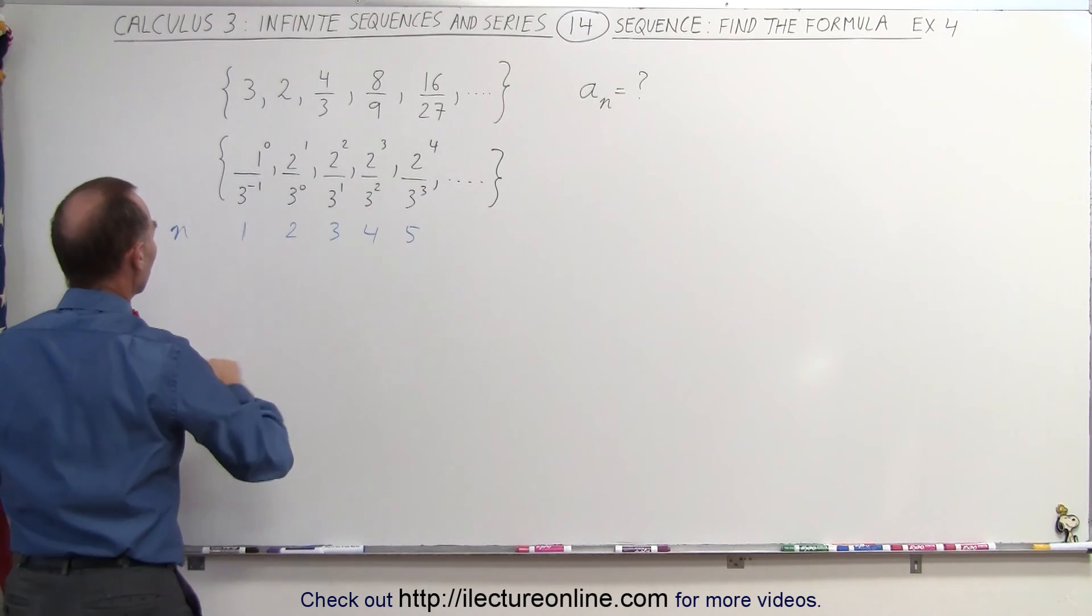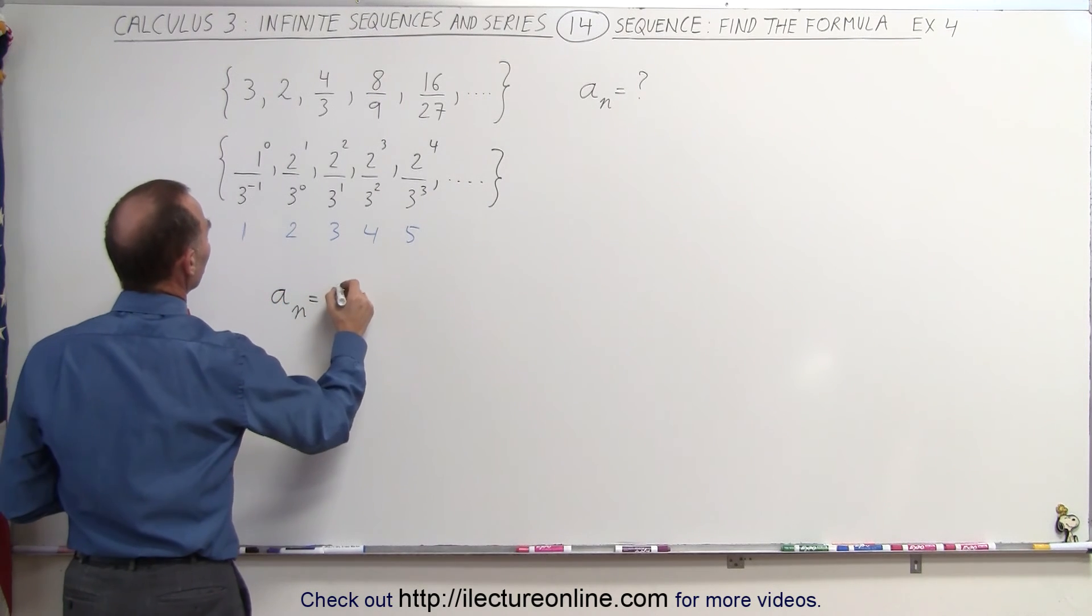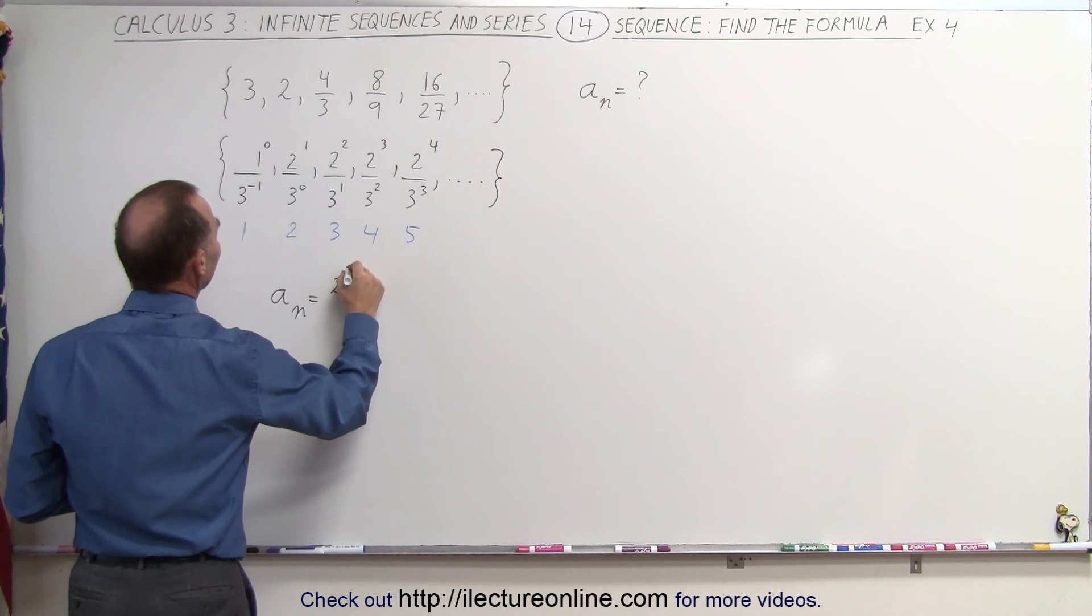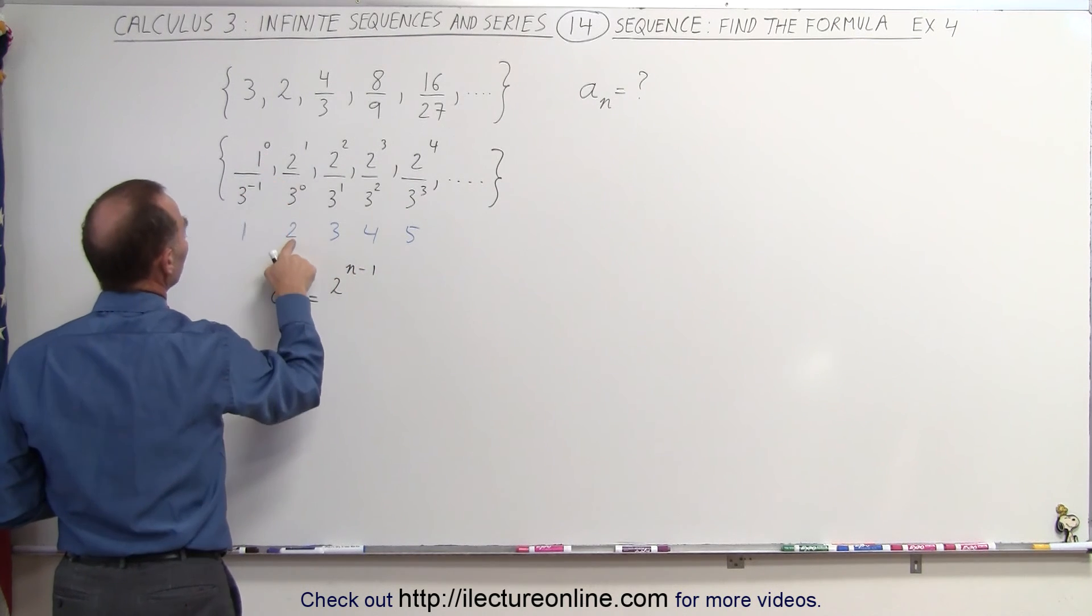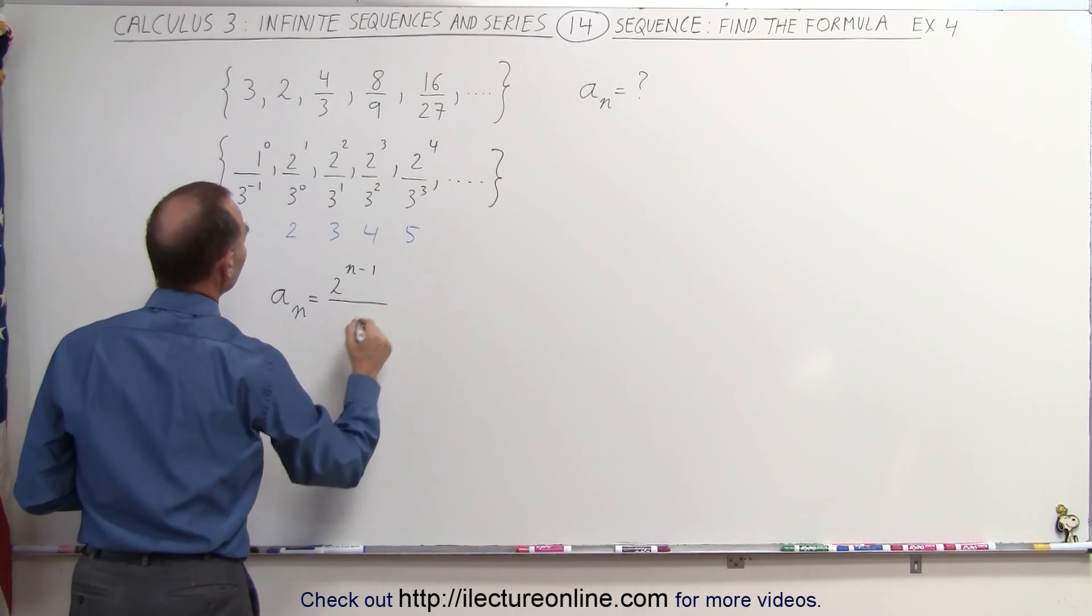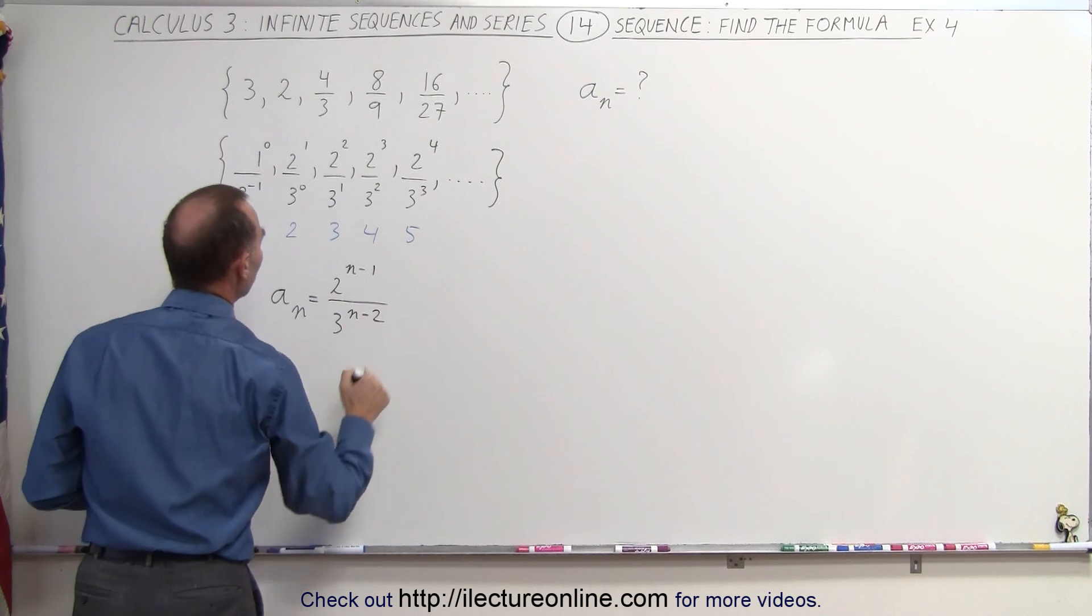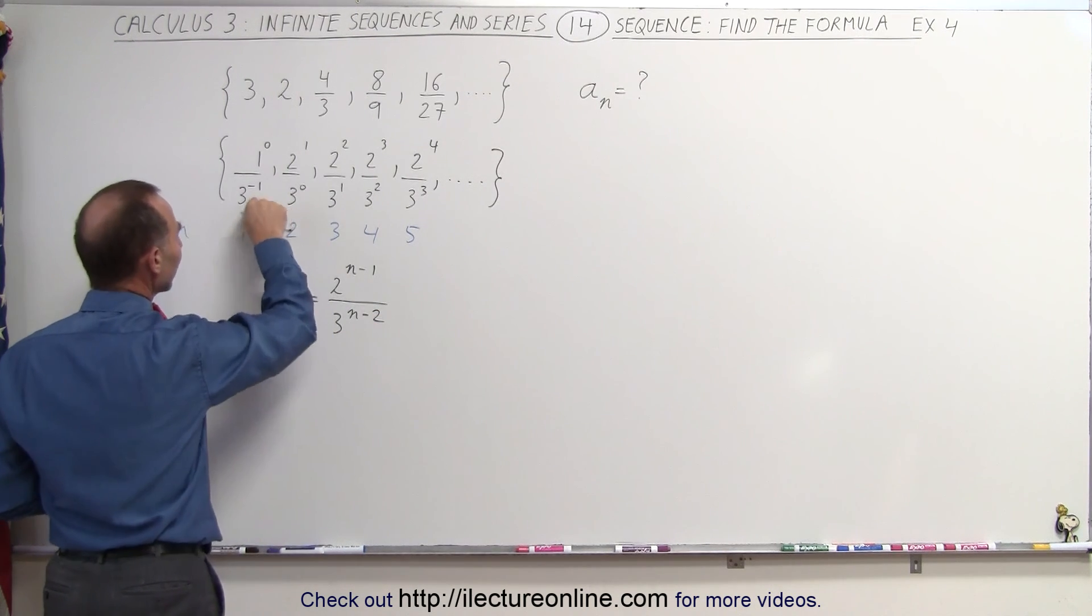I believe I can now write a sub n being equal to the number 2 to the n minus 1 power. So 1 minus 1 is 0, 2 minus 1 is 1, 3 minus 1 is 2. And in the denominator, I can write 3 to the n minus 2 power. When n is equal to 1, subtract 2 from that, I get a negative 1.